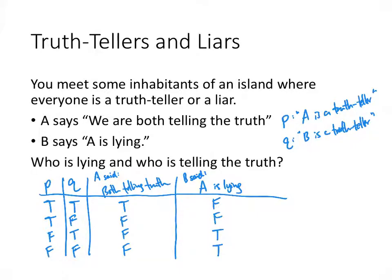We're looking for a scenario where we have consistency — where A is a truth-teller and said a true thing, or A is a liar and lied, and similarly for B. In scenario one, A is a truth-teller and told the truth, but B is a truth-teller yet lied — that doesn't match. In scenario two, A is a truth-teller but A lied — that doesn't match either.